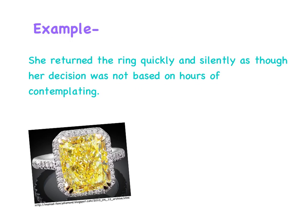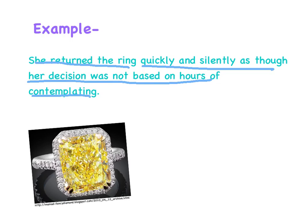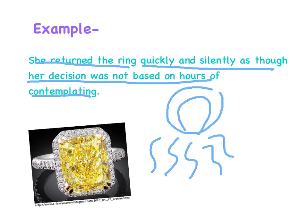Here is an original example of a cumulative sentence: 'She returned the ring quickly and silently, as though her decision was not based on hours of contemplating.' 'She returned the ring' is the independent clause — the body of the squid, the information you must know. 'Quickly and silently, as though her decision was not based on hours of contemplating' are the modifying phrases, the supporting details or extra information that add to your knowledge.